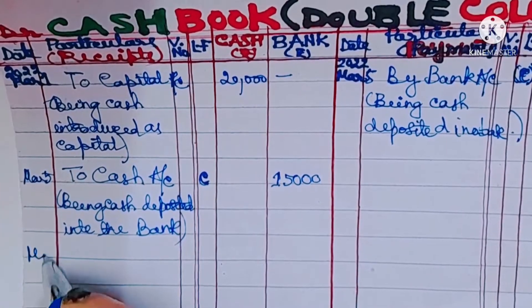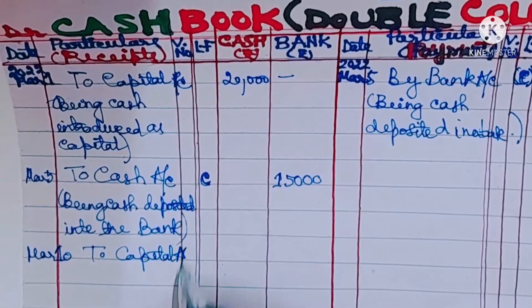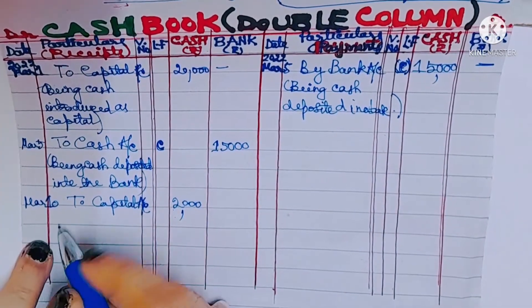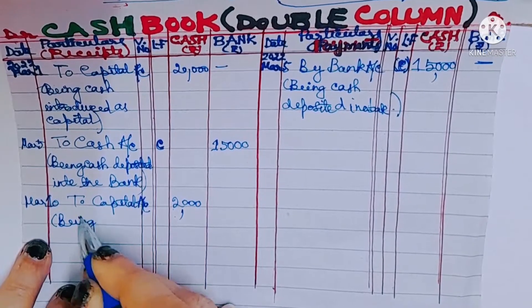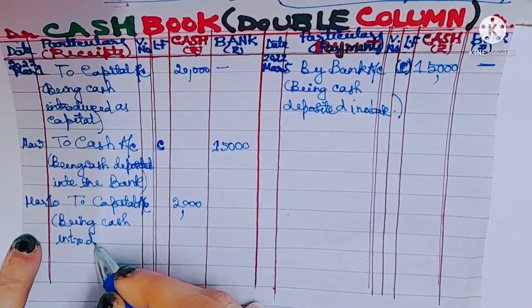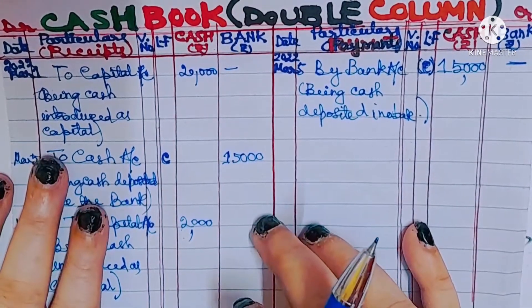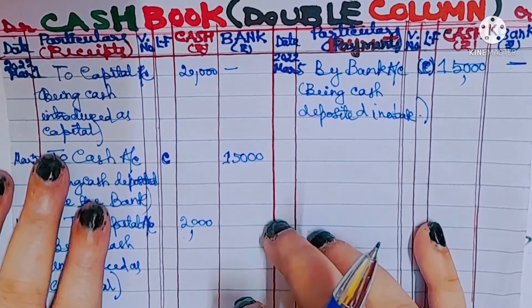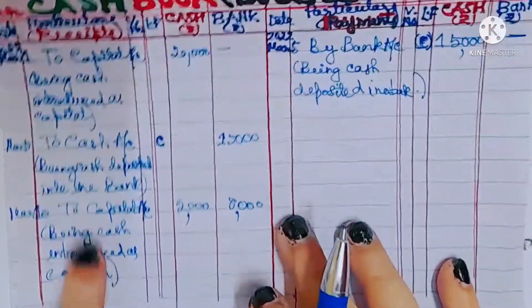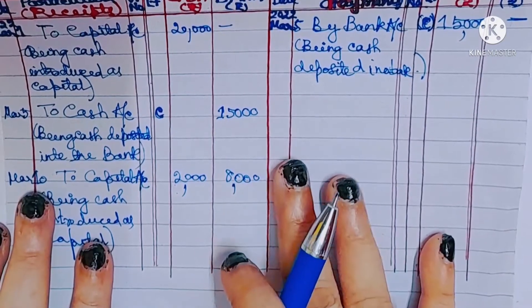On 10th March, we write 'To Capital Account' 2,000 in the cash column, with narration: being cash introduced as capital. We also write 'To Capital Account' 8,000 in the bank column. Out of 10,000 additional capital, 2,000 came as cash and 8,000 went directly into the bank.